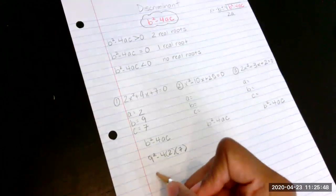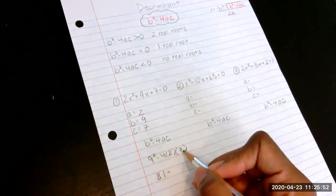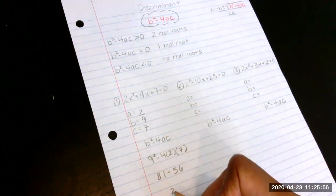And then I'm just going to do the math. If you do 9 times 9, you get 81 minus 4 times 2 is 8, 8 times 7 is 56. And when I subtract that, I get 25.